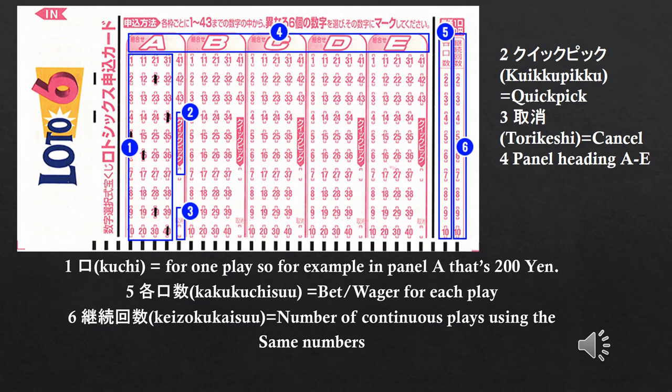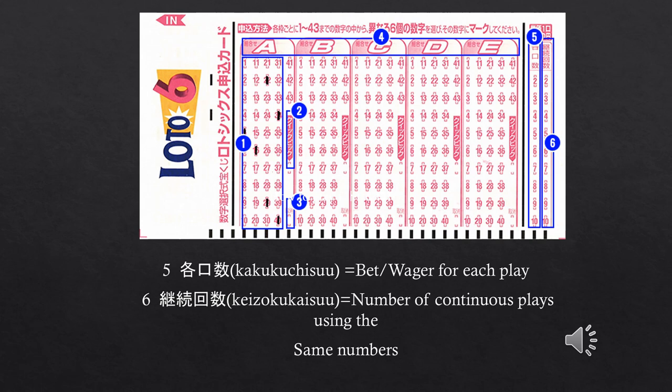Number 5 is kaku kuchi suu, which equals bet or wager for each play. Number 6 is keizoku kaisu, which equals the number of continuous plays using the same numbers. I will only be looking at numbers 5 and 6 with some examples.